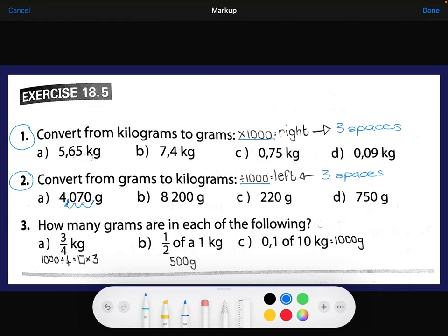Okay, so that's the answer for 2a. And then the question was about number three: how many grams are in each of the following? So just keep in mind that one kilogram is a thousand grams, right?